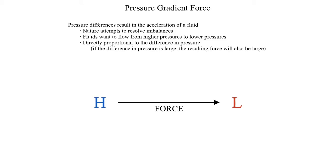The whole idea behind the pressure gradient force is it's nature attempting to resolve an imbalance. A very common theme in nature is that nature does not like things to be imbalanced, and oftentimes nature tries to resolve imbalances by moving higher values towards lower values. For instance, if you have a high concentration of a chemical — you may remember from chemistry — that high concentration wants to move towards lower concentrations. The same rule also applies to temperature: if you have an area that's really hot and an area that's really cold, nature wants to move the hot air towards the cold air.